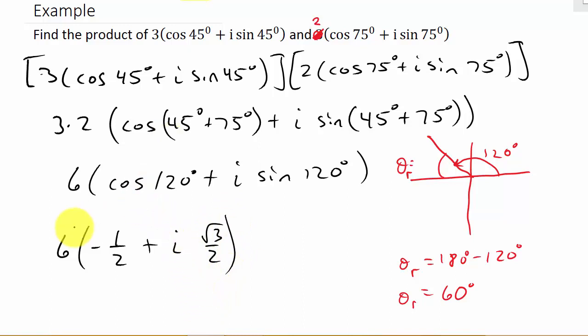And then we'll come over here and we'll distribute the 6. And so I get -3 plus, let's see, that's going to be 3i√3. And so that would be our solution.